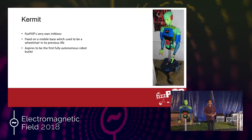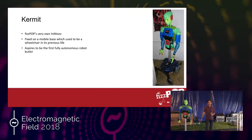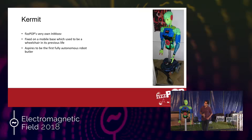As it stands right now, it's the top half of the humanoid robot. In our case it is sitting on a mobile base. We couldn't bring the mobile base to the camp — it was quite heavy. But as you can see, the mobile base is simply the lower half of an electric wheelchair.